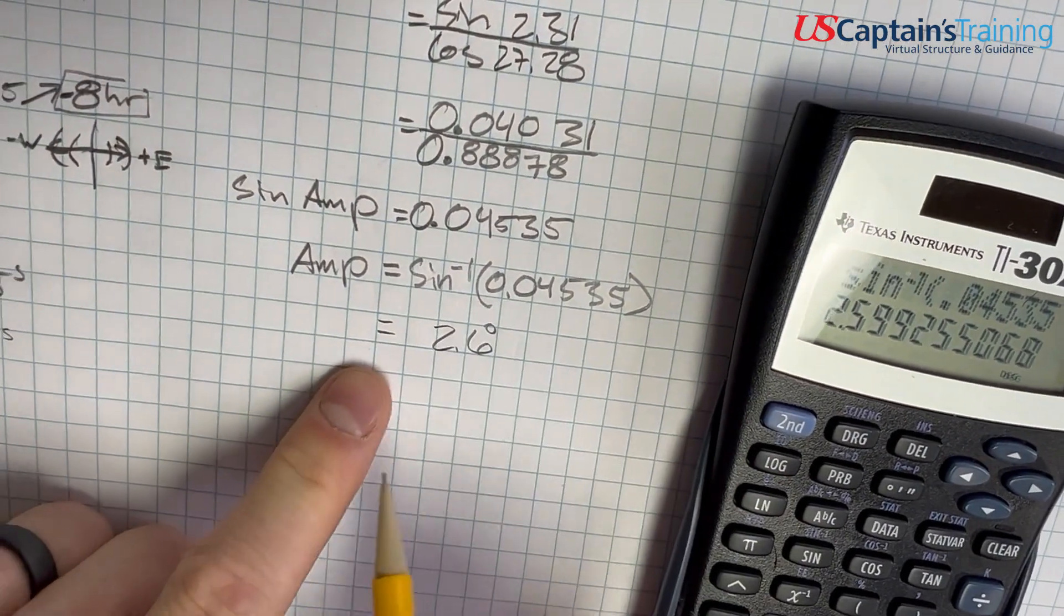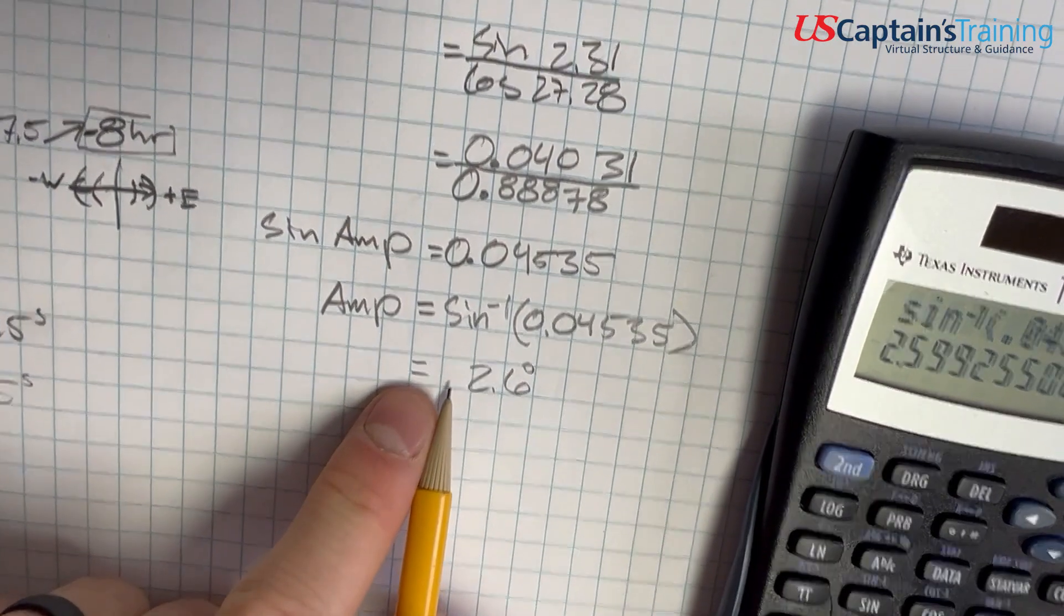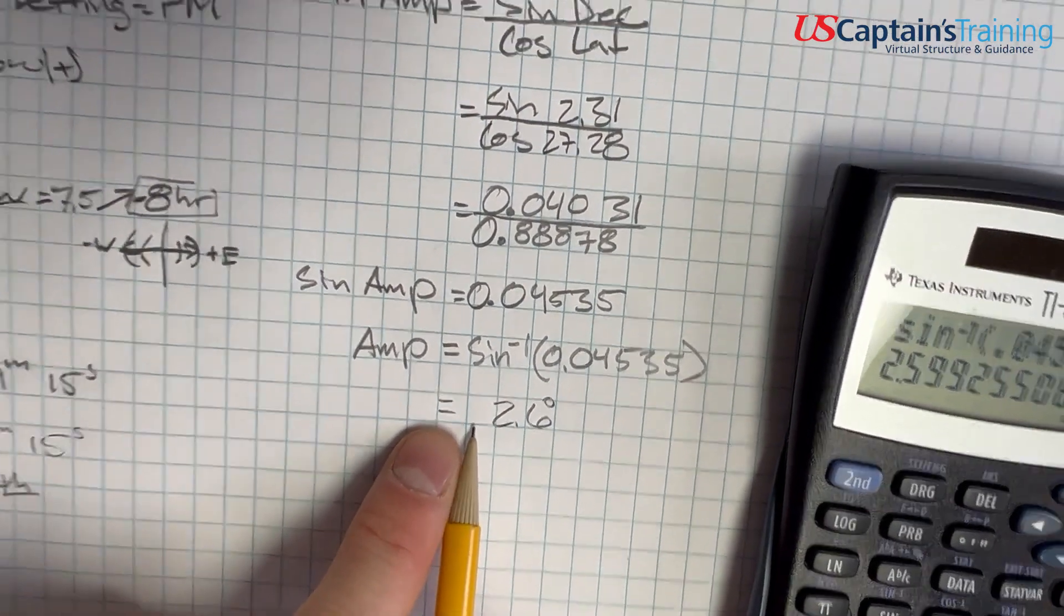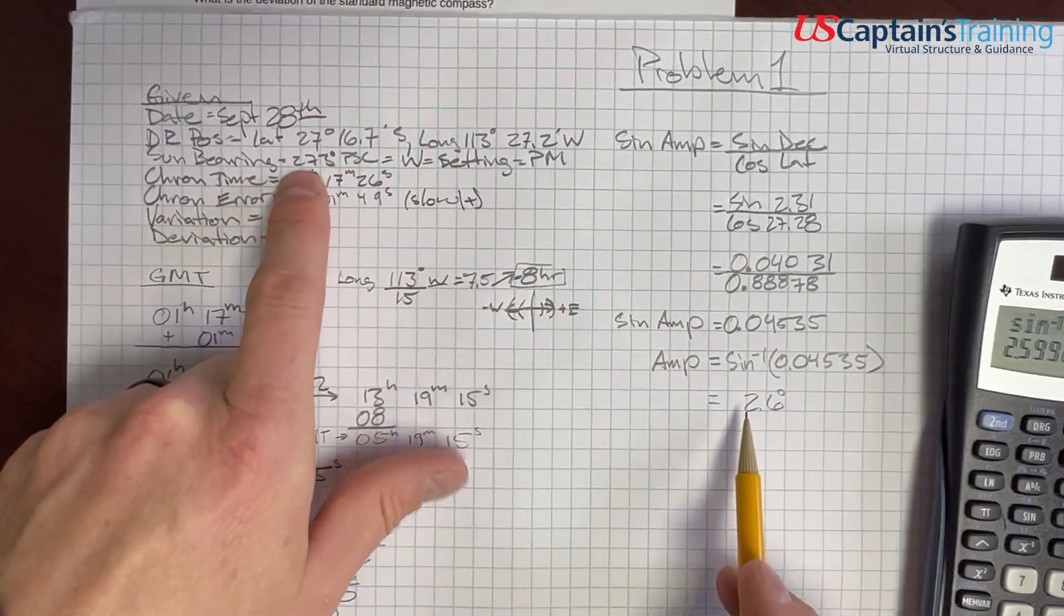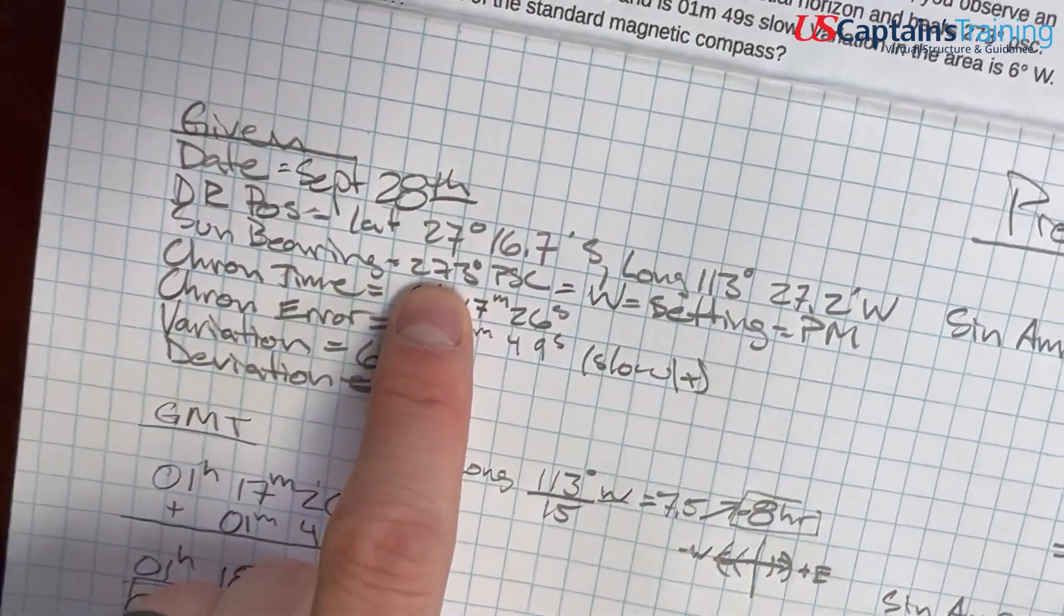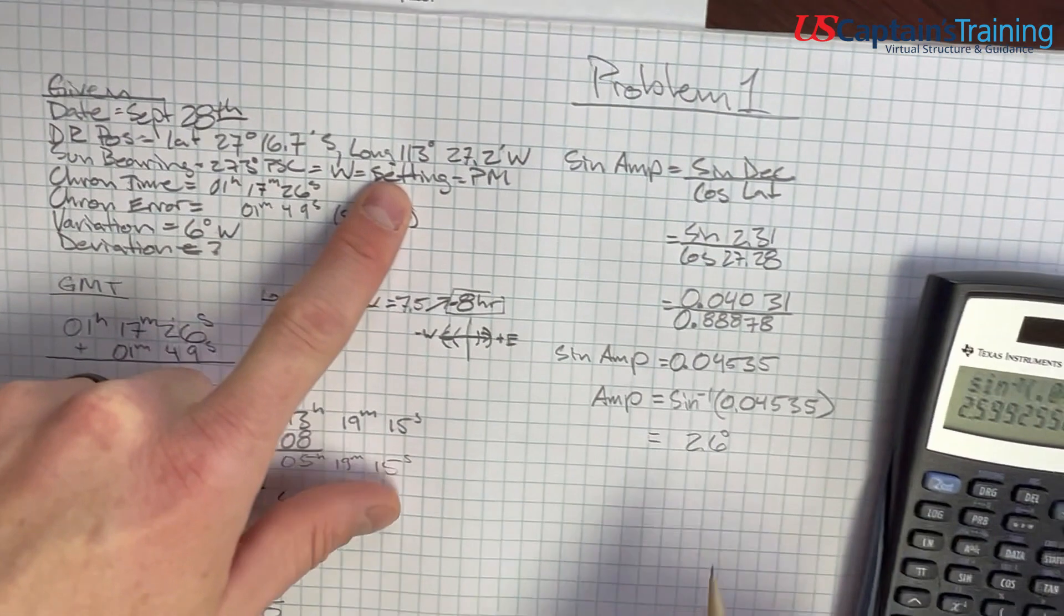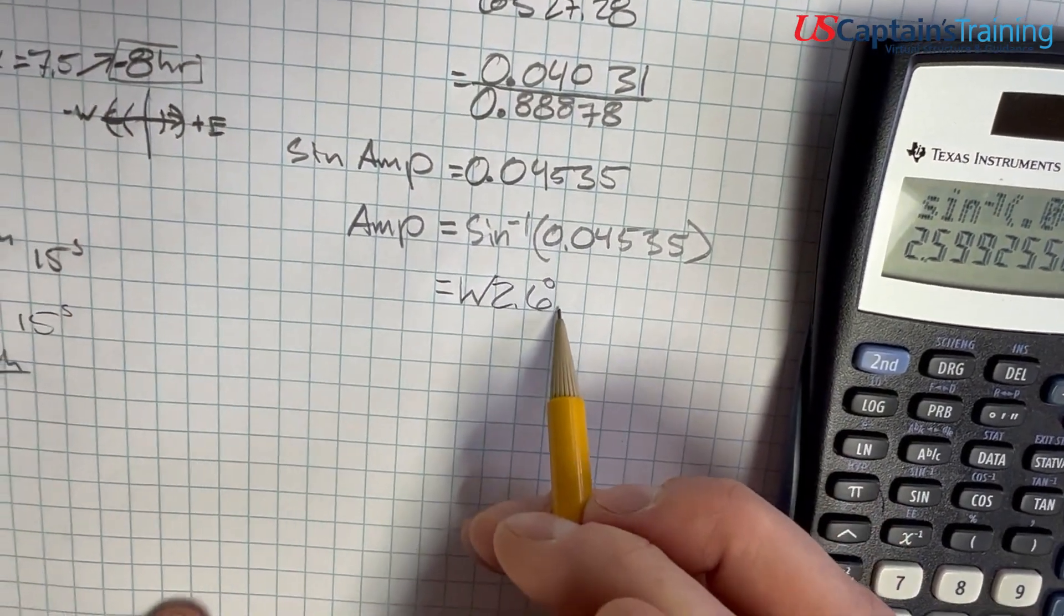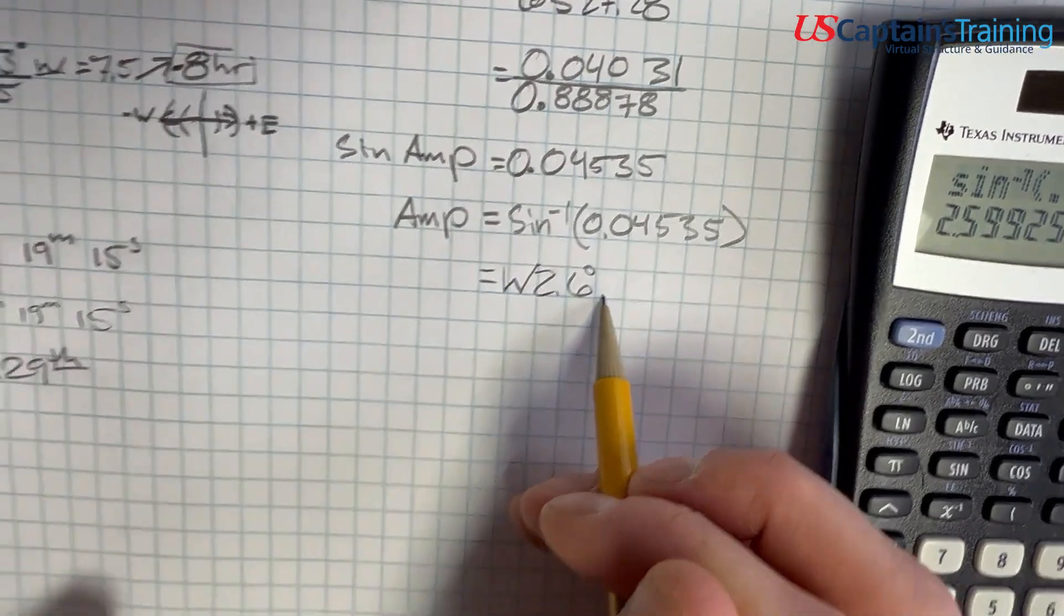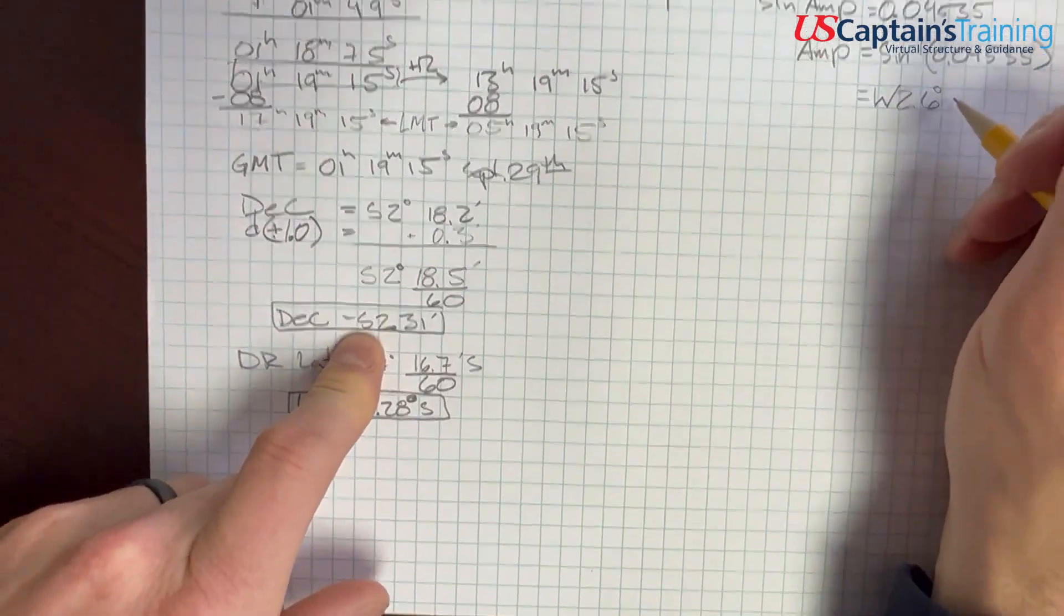Now we need to name this. Up front is east or west. We can tell because the sun's bearing was 273°, in the west, setting, so we name it west. On the end, north or south, we name it the same as declination: south.